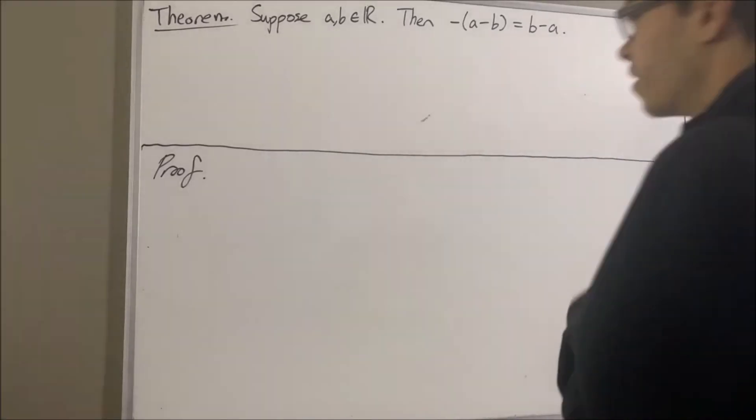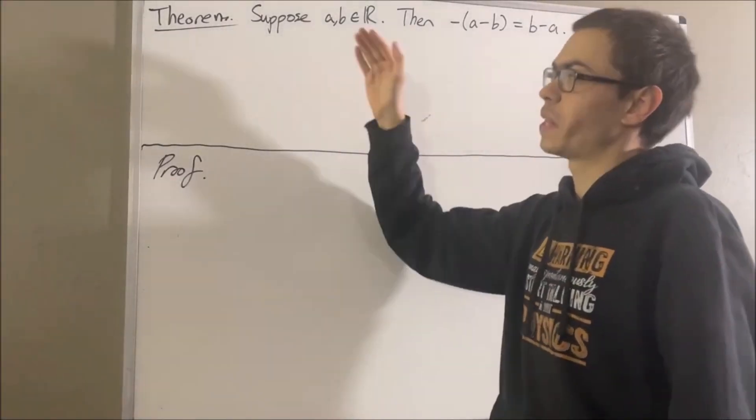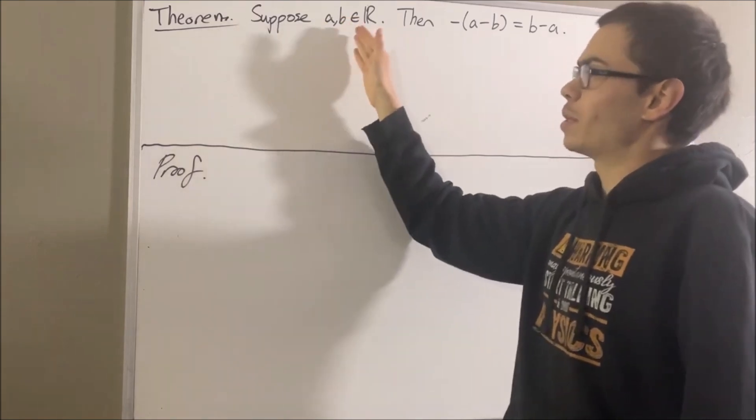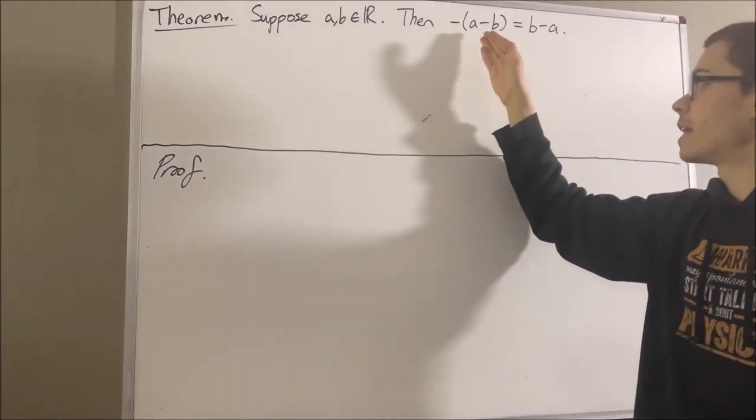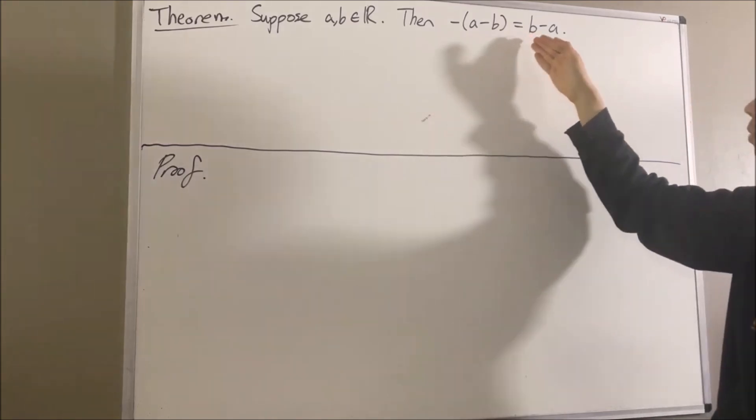Hello! In this video, we are going to prove the following theorem. Suppose A and B are real numbers. Then the negative of A minus B is equal to B minus A.